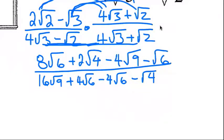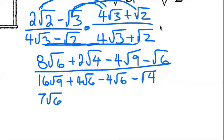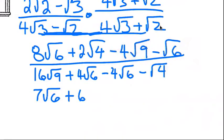Lots of simplifying to happen here. In the numerator: 8 root 6 minus root 6 is 7 square root 6. 2 square root 4 — square root 4 is 2, so 2 times 2 is 4 — that's going to be plus 4. Wait, actually 2 square root 4 is 2 times 2 which is 4. 4 square root 9 is 4 times 3, so that's 12, minus 12.